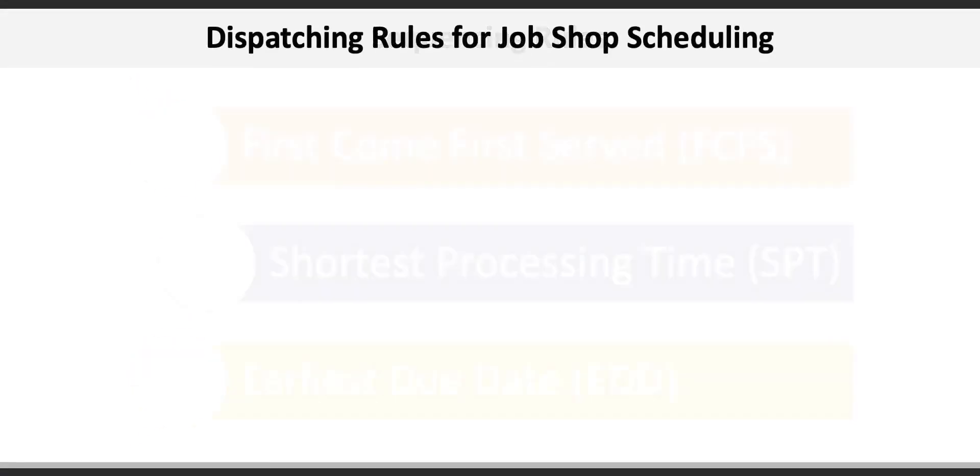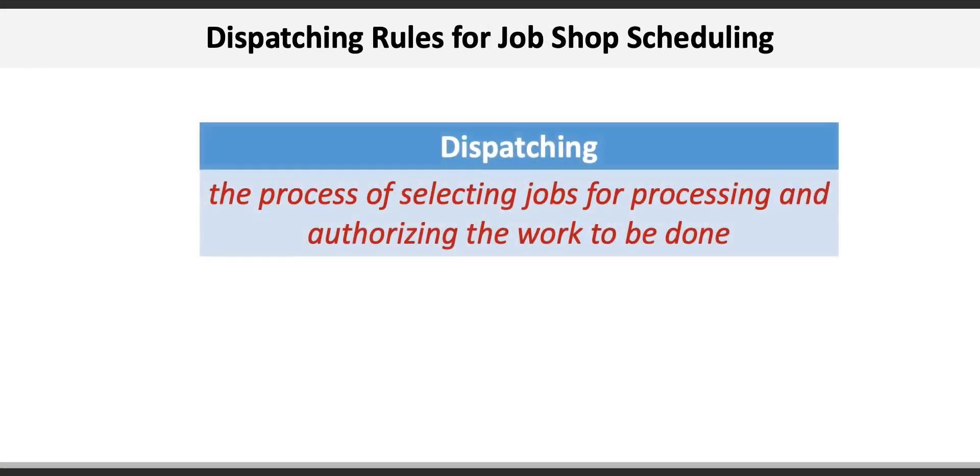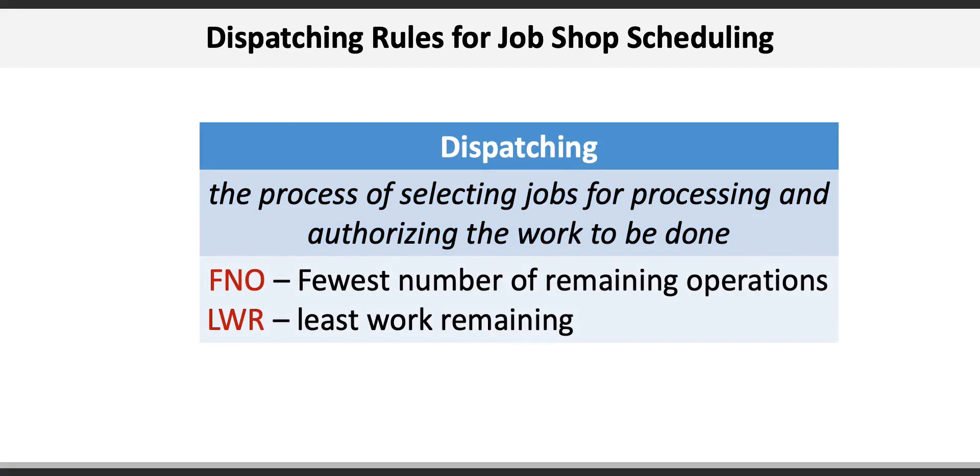In addition, scheduling in real manufacturing environments is very dynamic. Jobs are continuously being created, eliminated, and changed, and unforeseen events such as breakdowns occur that invalidate previously developed schedules. Therefore, sequencing decisions must be made over time and is often done through dispatching. Dispatching is the process of selecting jobs for processing and authorizing the work to be done. Typical dispatch rules include using the fewest number of operations (FNO) and least work remaining (LWR).